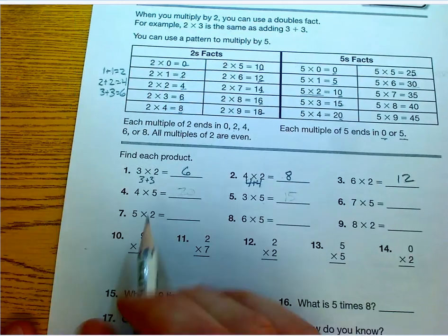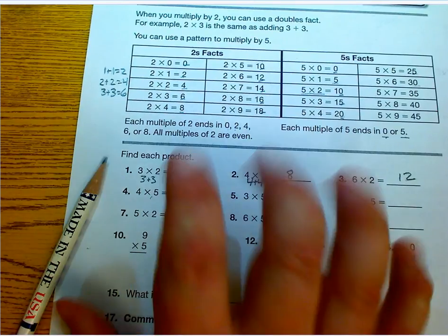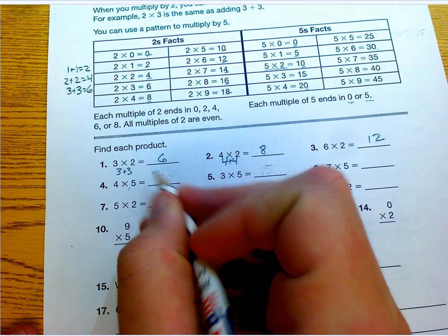And then 4 times 5, I'm going to go ahead and skip count again. 5, 10, 15, 20. Skip counting 4 times, I get to 20.